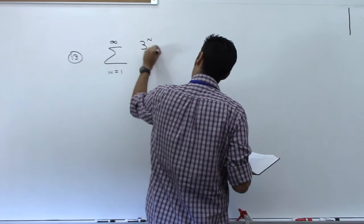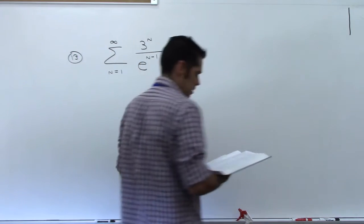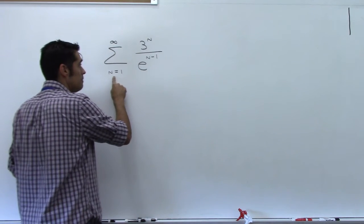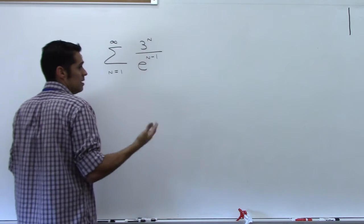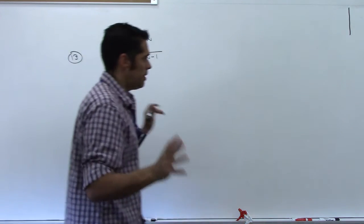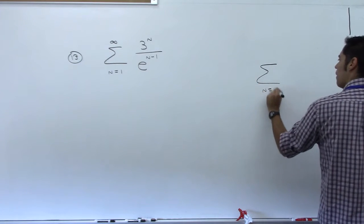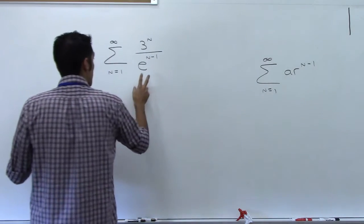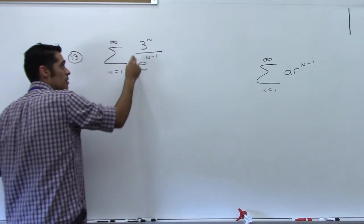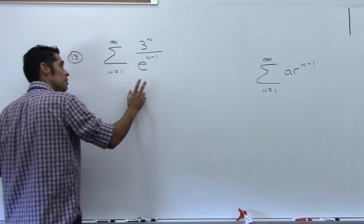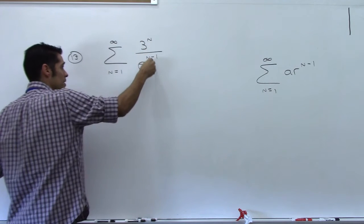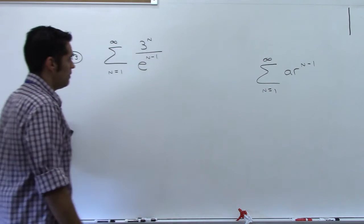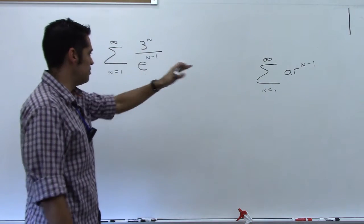The series is 3^n over e^(n-1), starting at n=1. Looking at this, the numerator and denominator both have bases that are numbers — e is a number — and both are raised to exponents with n in them. That's exactly what a geometric series looks like. If I can make both exponents n minus 1, I can use that formula.